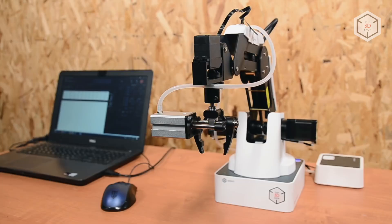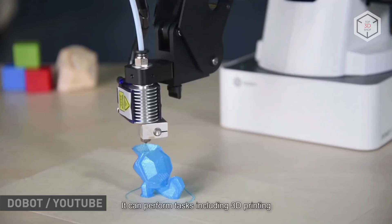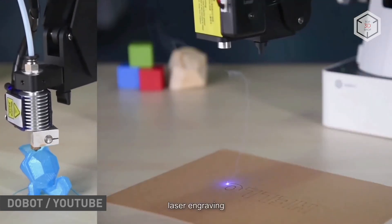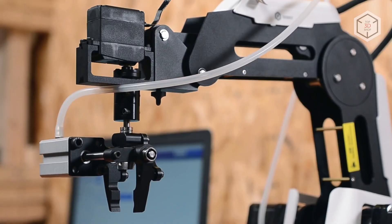The Dubot Magician is a multifunctional desktop manipulator best suited for educational purposes. It comes in three versions, which include different end effectors. For example, the robot can move objects, perform laser engraving, 3D print, write, and draw.